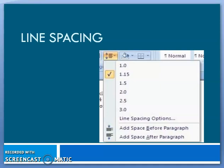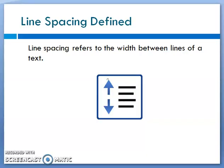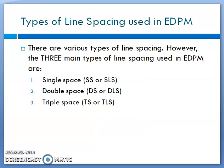Line spacing refers to the width between lines of text. There are various types of line spacing; however, the three main types used in EDPM are: single space, denoted by SS or SLS; double space, DS or DLS; and triple space, TS or TLS.